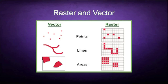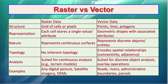Here you can see the distinction between raster and vector data. The same points are represented as picture cells in raster, while lines in vector data are also represented as picture cells in raster. Structurally, raster data uses a grid, while vector data uses points, lines, and polygons with specific geometry. In terms of representation, each raster cell stores a single value or attribute, whereas vector data uses geometric shapes with associated attributes.